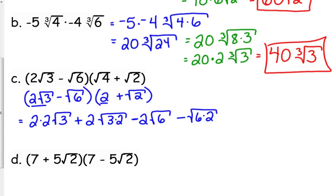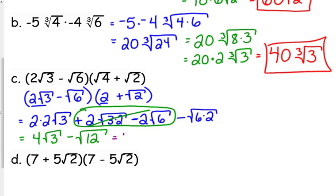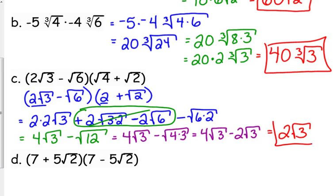Now we need to simplify. Is there anything that we can simplify right off the bat? So 2 times 2 is 4, so we've got 4 square roots of 3. Then when we look at the next two terms, they're both the square root of 6. One is positive 2, one is negative 2, so those cancel each other out. And then we've got minus the square root of 12. Is our answer fully simplified? No, because 12 breaks down. So we've got 4 square root of 3 minus the square root of 4 times 3, so that's 2 square root of 3. And 4 minus 2 is 2 square roots of 3.